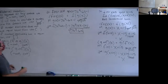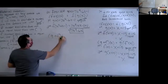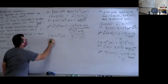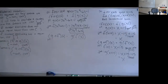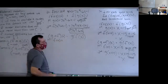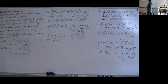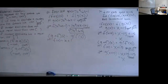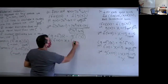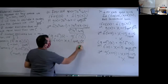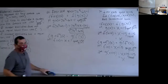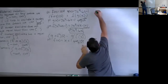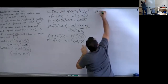Now I'll find g of f of x. First step is to find f of x. f of x is x plus 1 — can't simplify that, so it all goes into g. So my second step is finding g of (x plus 1), meaning everywhere there's an x in g I put (x plus 1).